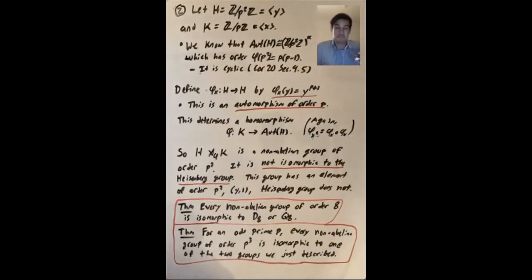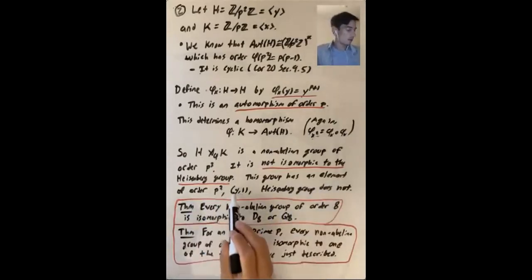What group is it? I don't know, but it's not isomorphic to the Heisenberg group that we just saw. And the reason we can say that they're not isomorphic is because isomorphic groups have to have the same number of elements of each order. And this group has an element of order p squared, y.